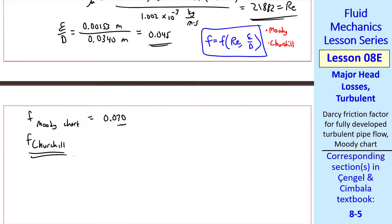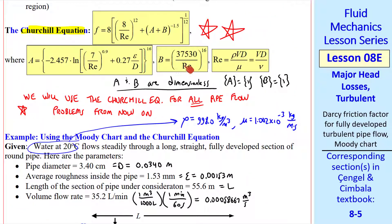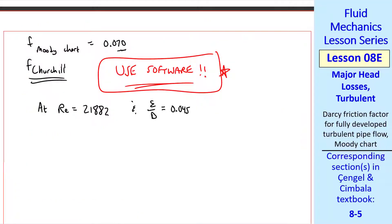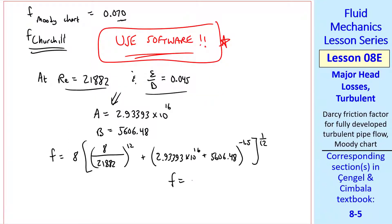Back to our problem. Let's write F from the Moody chart is 0.070. We really can't get any more than two digits typically, which is okay, since the Moody chart itself is only good to about plus or minus 5% at best. Now let's calculate F Churchill for comparison. I strongly urge you to use software. The Churchill equation is rather long and ugly, and you don't want to make calculator errors. At our Reynolds number and our epsilon over D, plug these into Excel or any other software you want, and make sure you get these numbers. A is huge and B is a reasonable number. And when you plug into Churchill you get F equals 0.06993, which is very close to the value we had from the Moody chart.